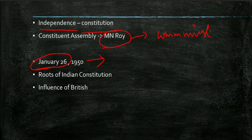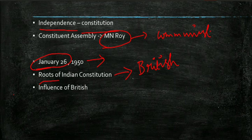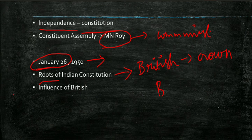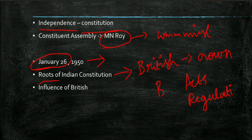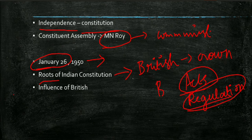Even though India got its own constitution, it has its roots from Britain because the British ruled us for many years. After the British Crown took control, they made many regulations and acts which had an impact on India's constitution. In the next lectures we are going to see various acts and regulations passed by the British government.